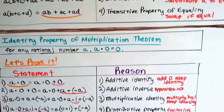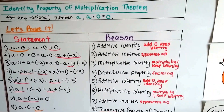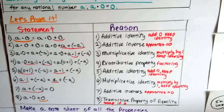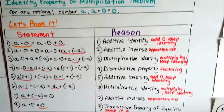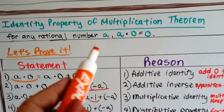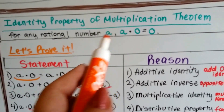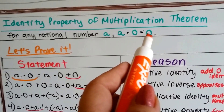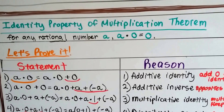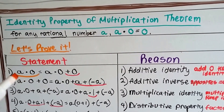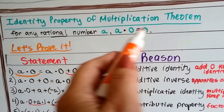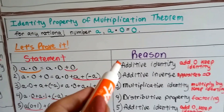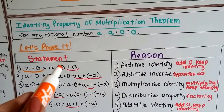The last example is the identity property of multiplication. The theorem says: for any rational number a, a times 0 equals 0. This one has eight steps, so bear with me. Our given is a × 0. First, a × 0 equals a × 0 + 0, by the additive identity — adding zero keeps its identity.